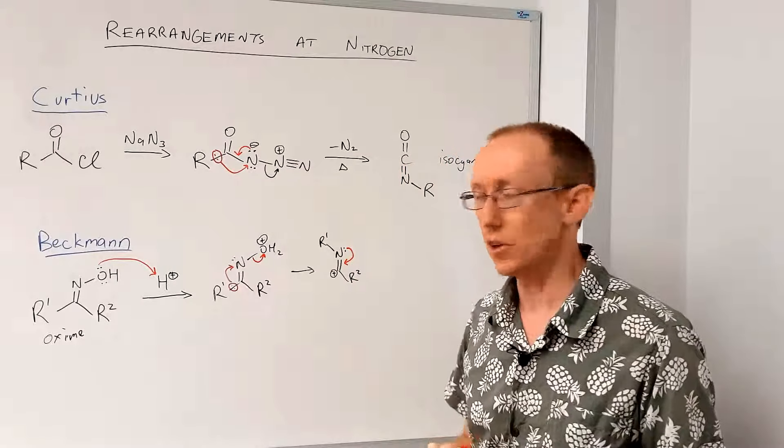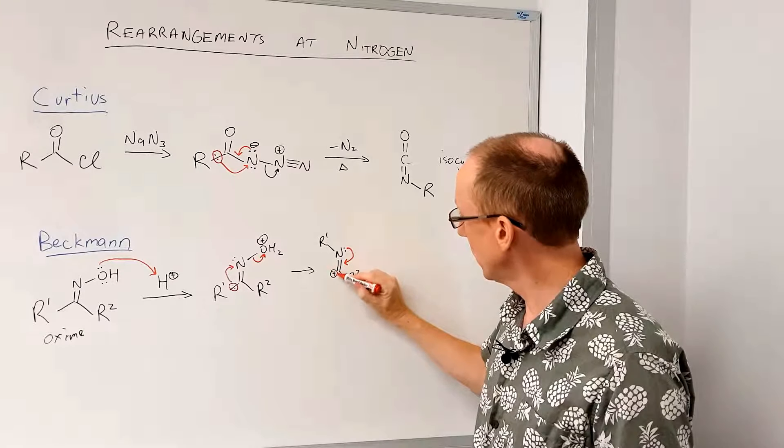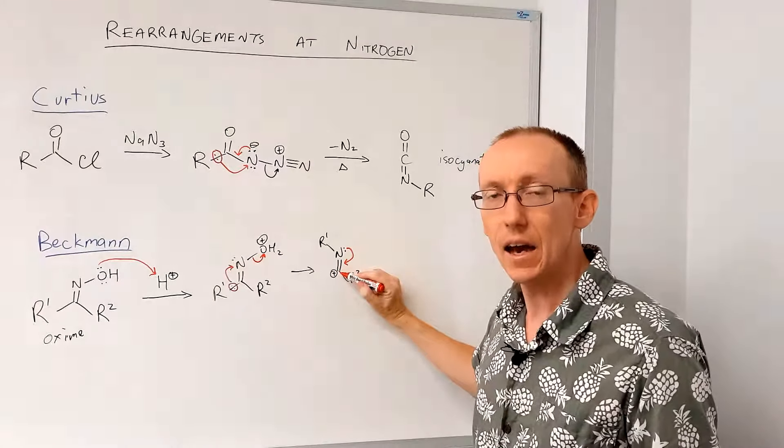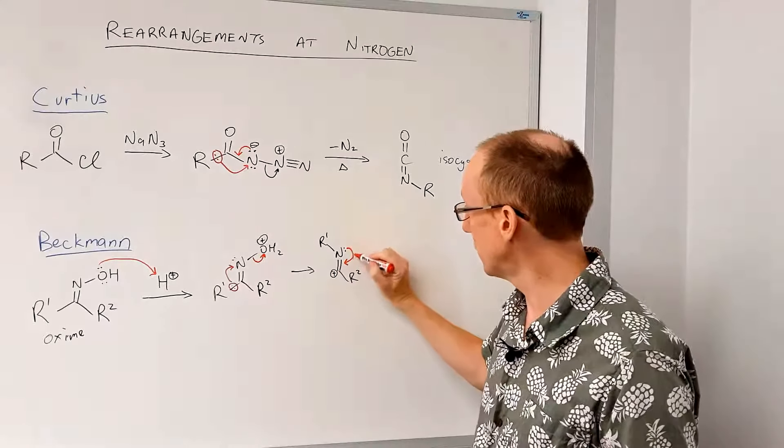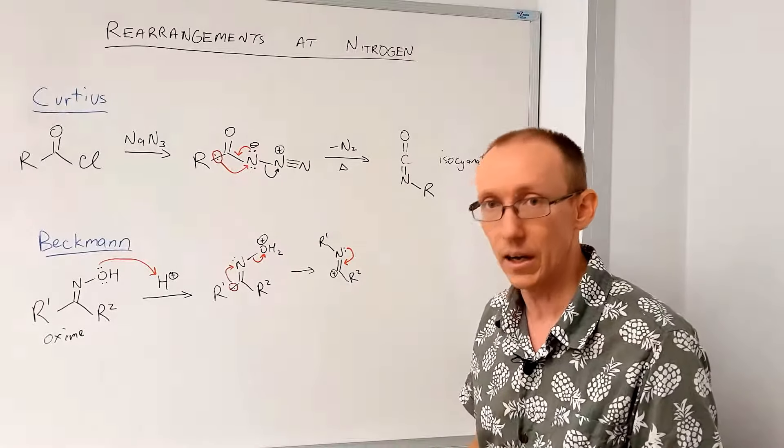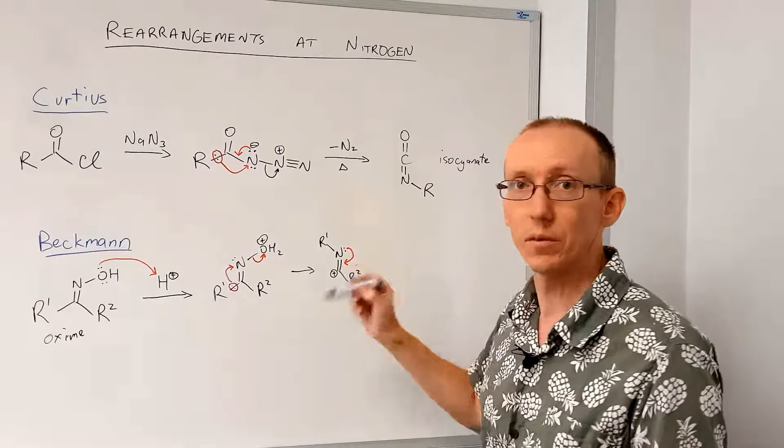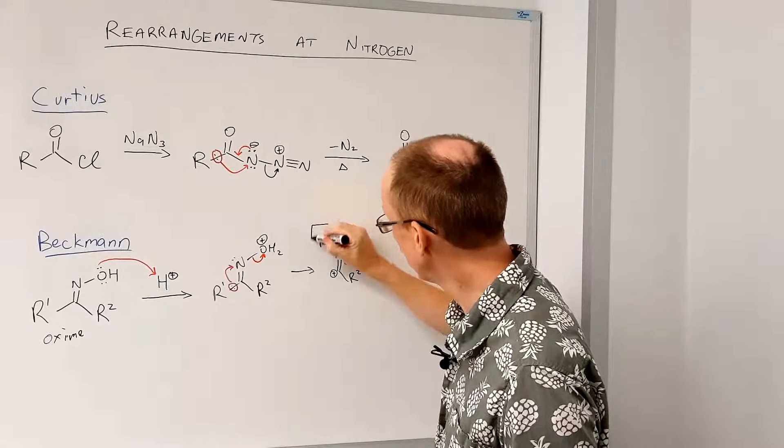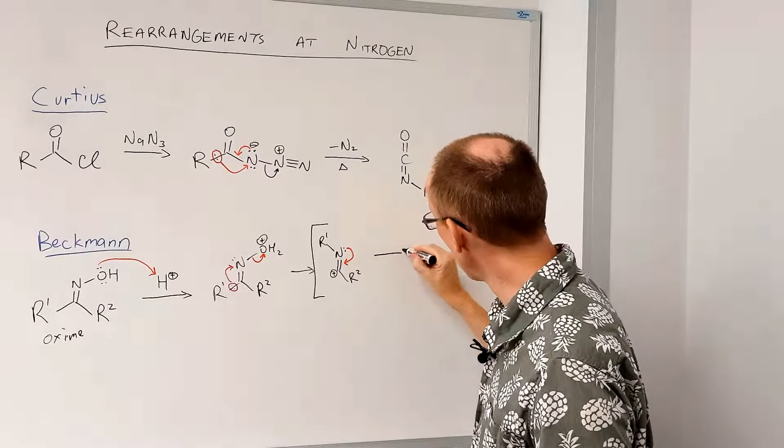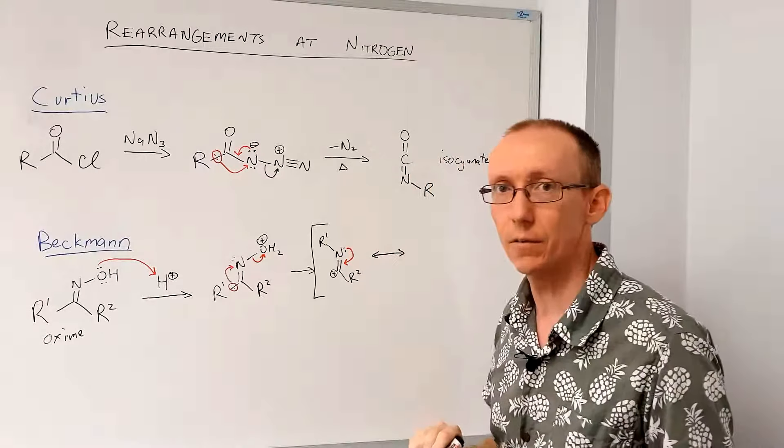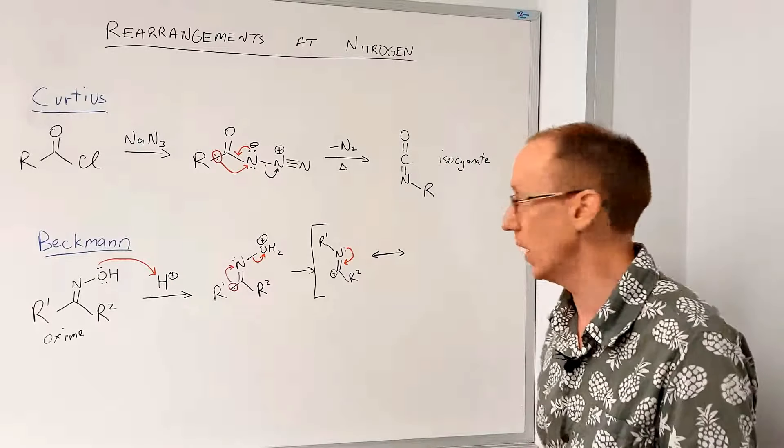We push that pair of electrons in. That carbocation, that carbon there, only has six valence electrons. So this is fine. We're not breaking our golden rule of not making five bonds to carbon. So we're going to draw a resonance arrow, a double-headed arrow. Very important to choose your arrows carefully.